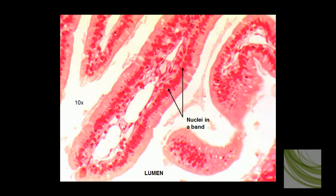Here I've increased magnification to the 10X objective, and we can see the simple columnar cells. We can see these nuclei in a band. This is a villi, this large projecting structure. Here is the lumen, or the space.